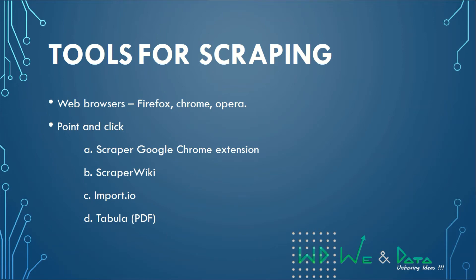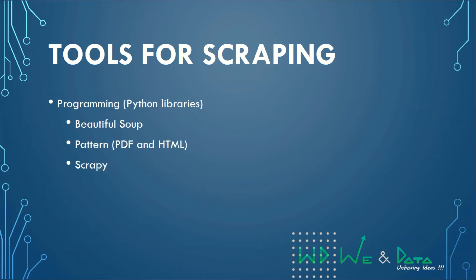Tools for web scraping: for web browsers, you should go for Firefox, Chrome, or Opera — don't use Microsoft Edge or Internet Explorer. Point-and-click tools include the Scraper Google Chrome extension, which lets you collect data from the page you're on. Scraper Wiki is also available. Import.io is a product from a company called Import.io where you can scrape data. Tabula is used for PDFs — if there are tables in a PDF, Tabula can extract them.